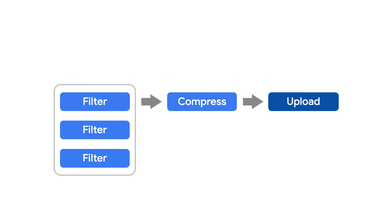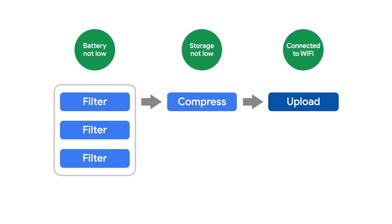Notice there is a battery constraint on the filter image workers, a storage constraint on the compress worker, and a network constraint on the upload worker. WorkManager will check if these constraints are met before running the associated worker.